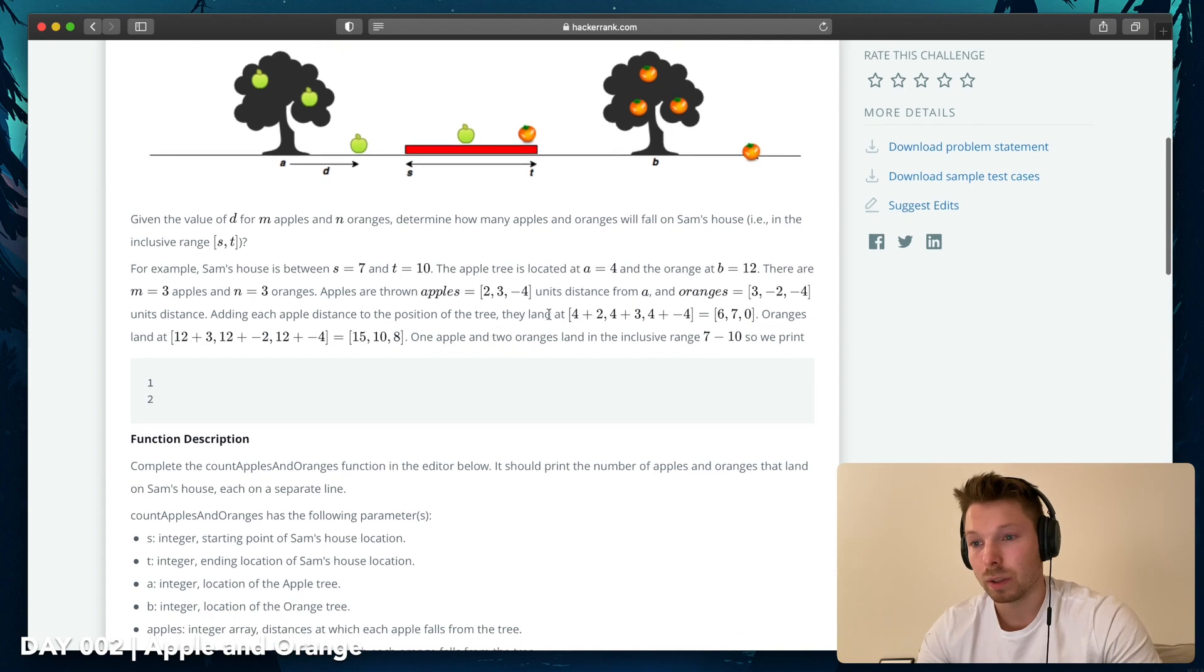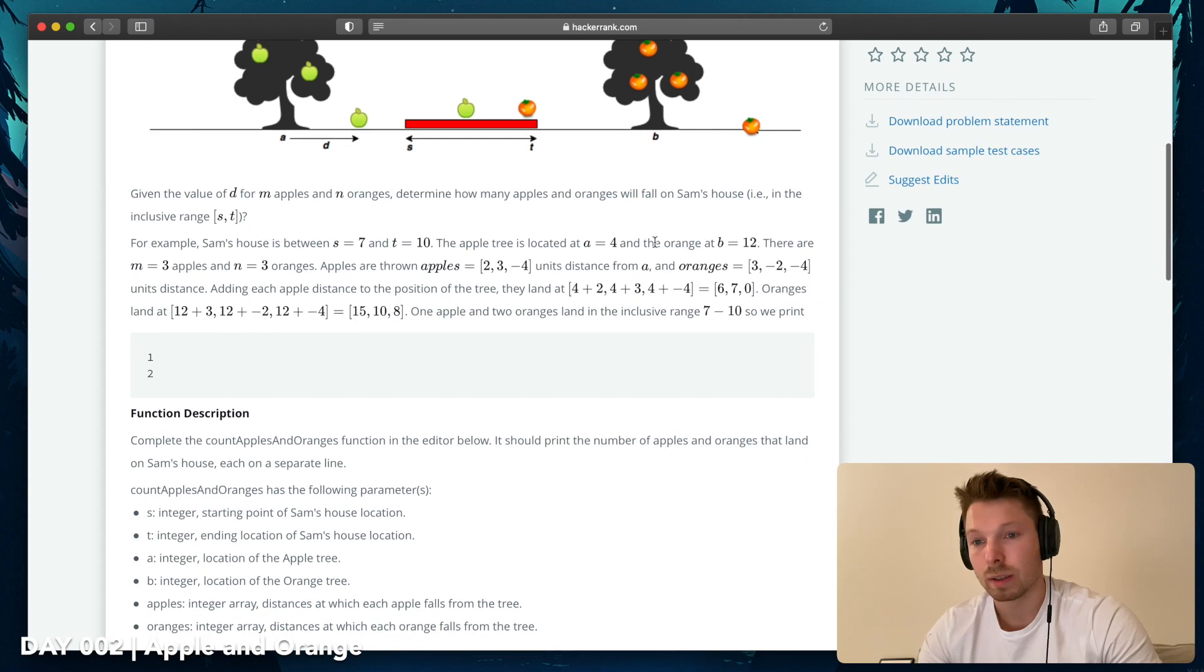The apple tree is located at A4 and the orange at B12. There are three apples and three oranges. Apples are thrown two, three, four units distance, which means we can ignore the minuses here, from A. And oranges three, two, and four, where we can ignore three units distance. Adding each apple distance to the position of the tree, they land at four plus two, four plus three, and four minus four.